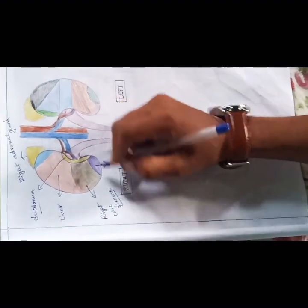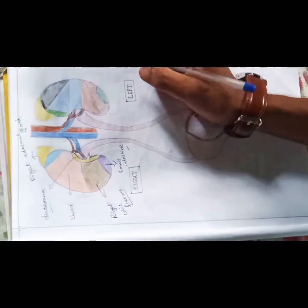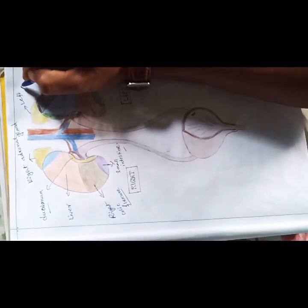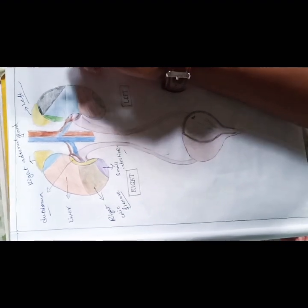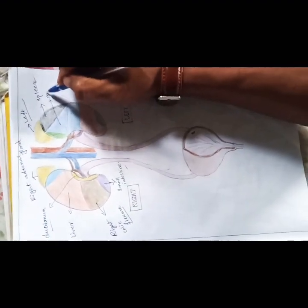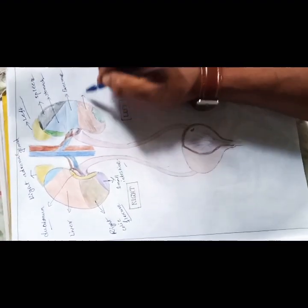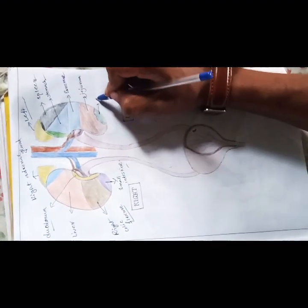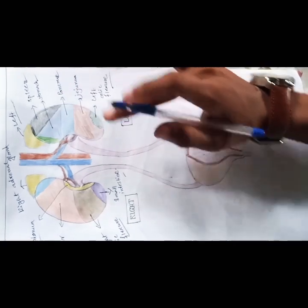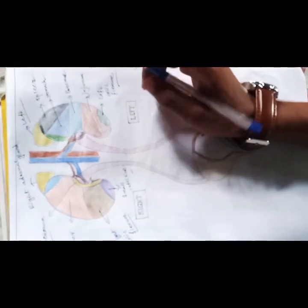For the left kidney: superiorly you can see the left adrenal gland, and anteriorly the spleen, the stomach, the pancreas, the jejunum, and the left colic flexure. Posteriorly, both kidneys have the diaphragm and the muscles of the posterior abdominal wall.